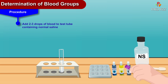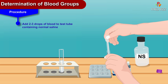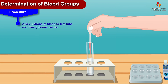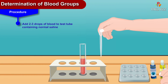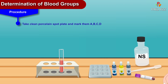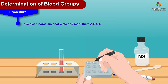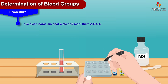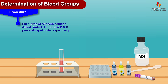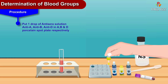Add two to three drops of blood to the test tube containing the normal saline. Now take a clean porcelain spot plate and mark the spots A, B, C, and D. Put one drop of anti-sera solution — anti-A, anti-B, and anti-D — in the A, B, and D porcelain spot plates respectively.